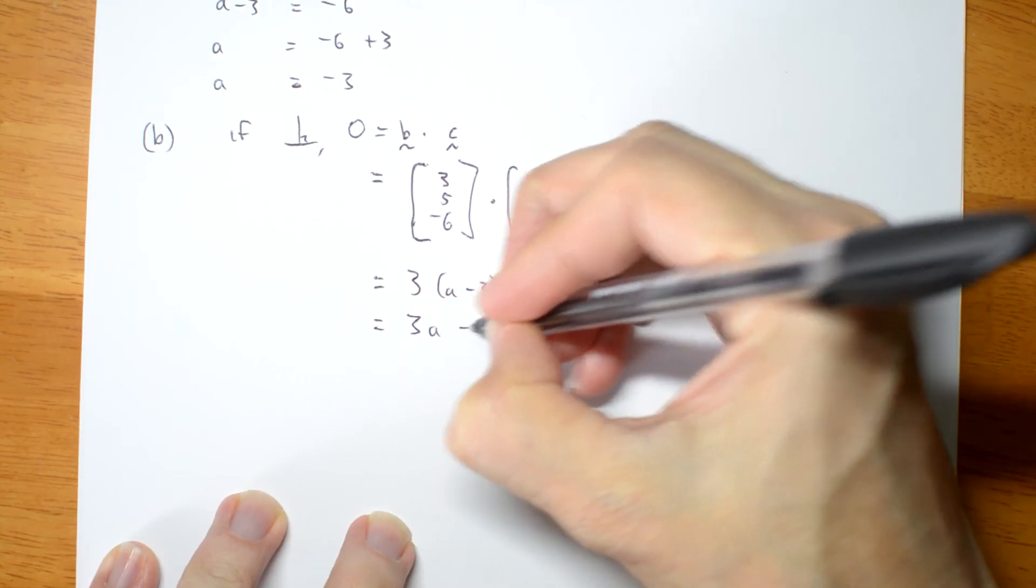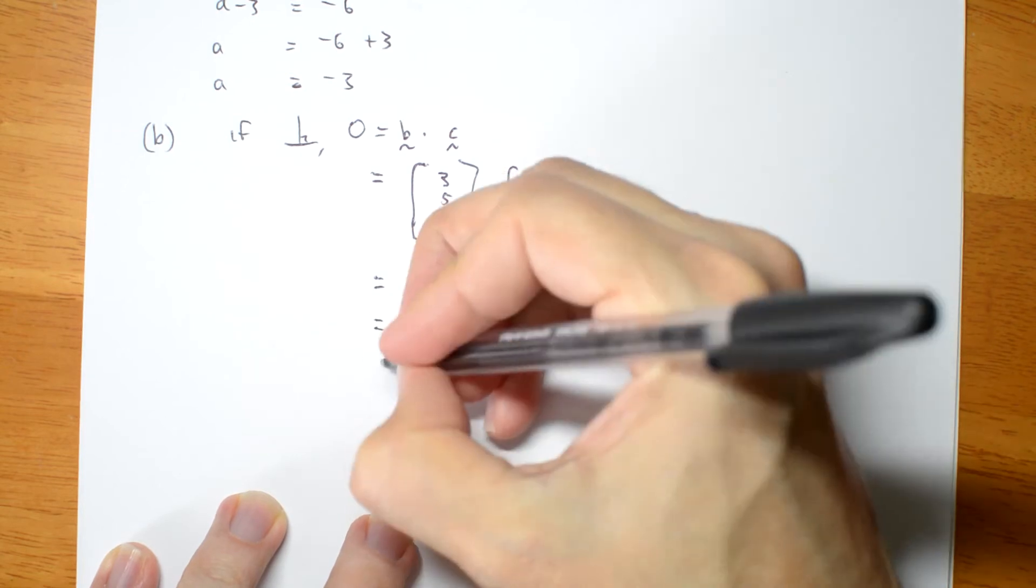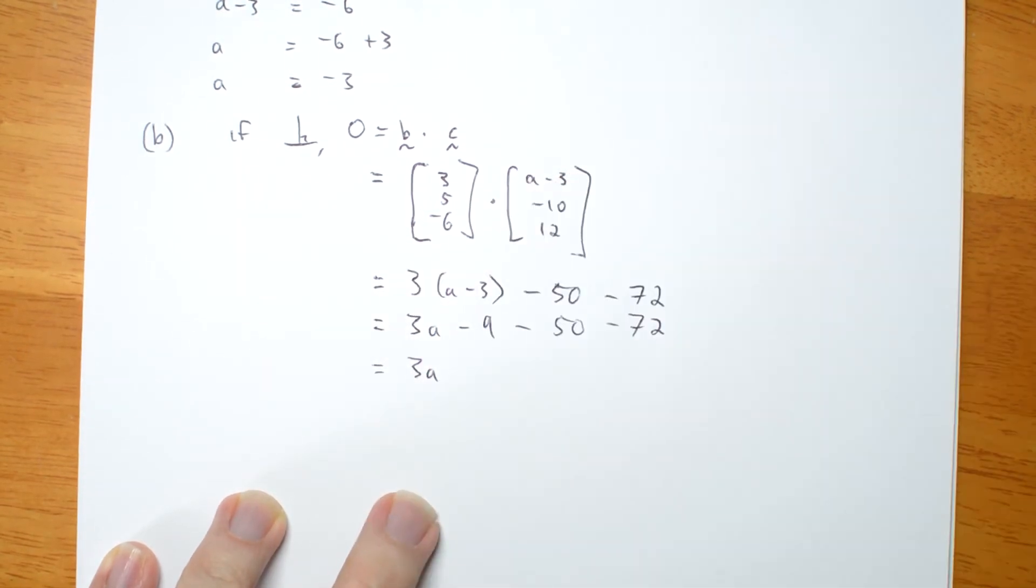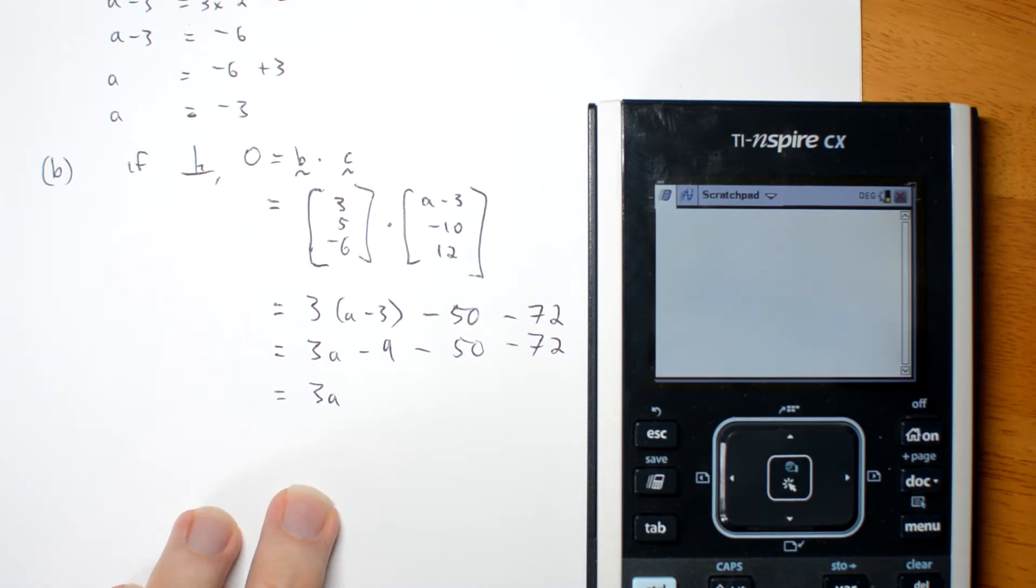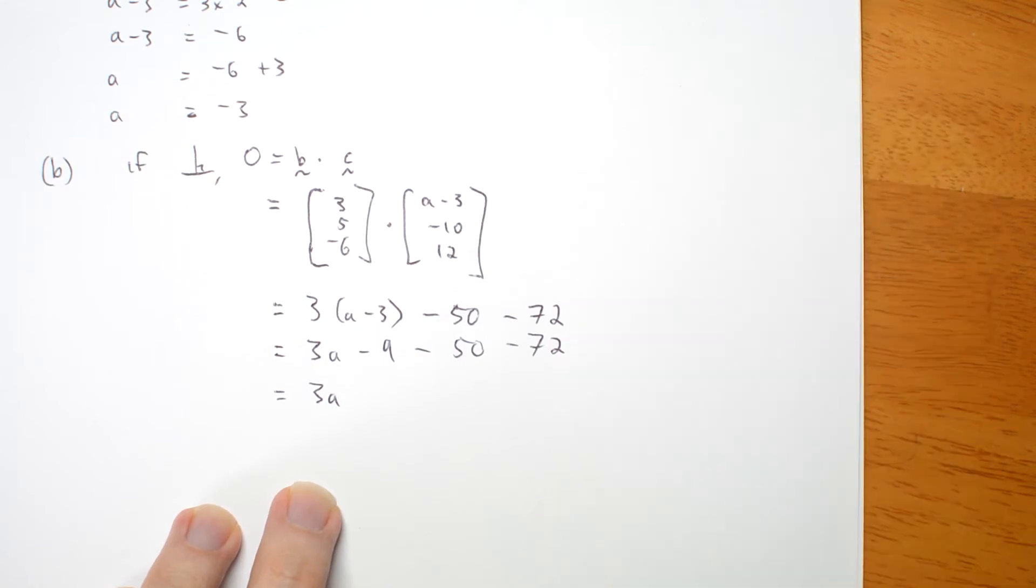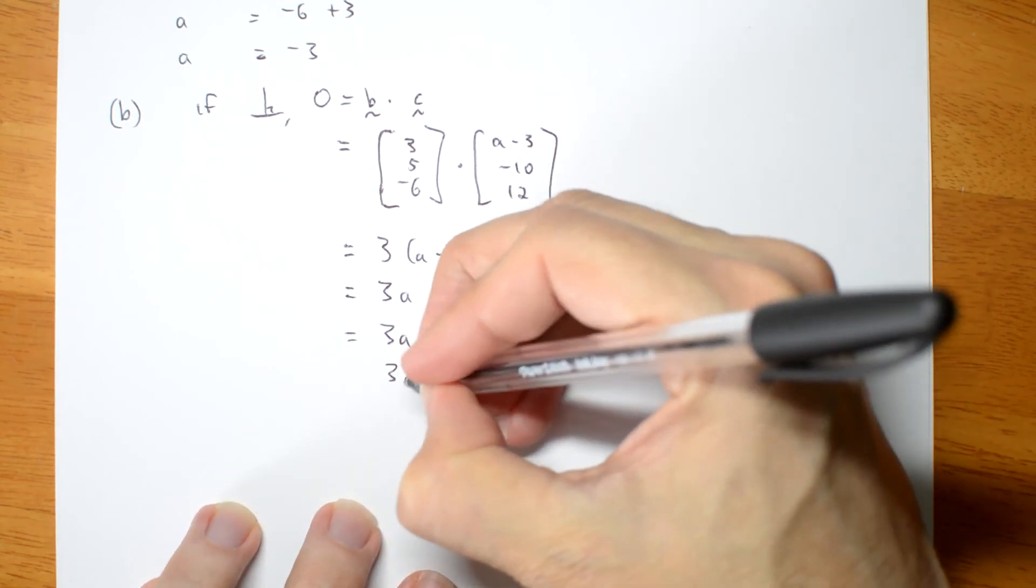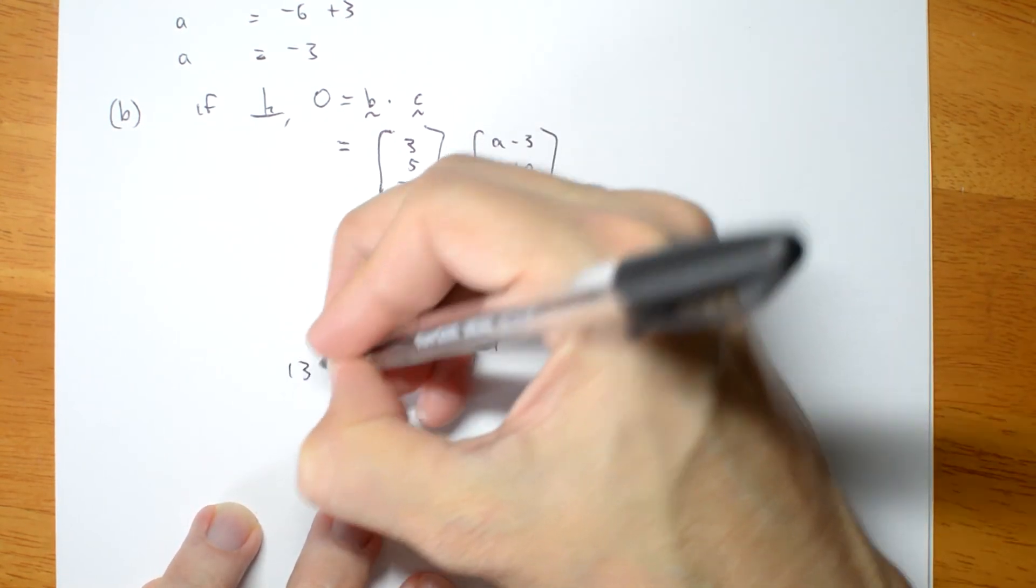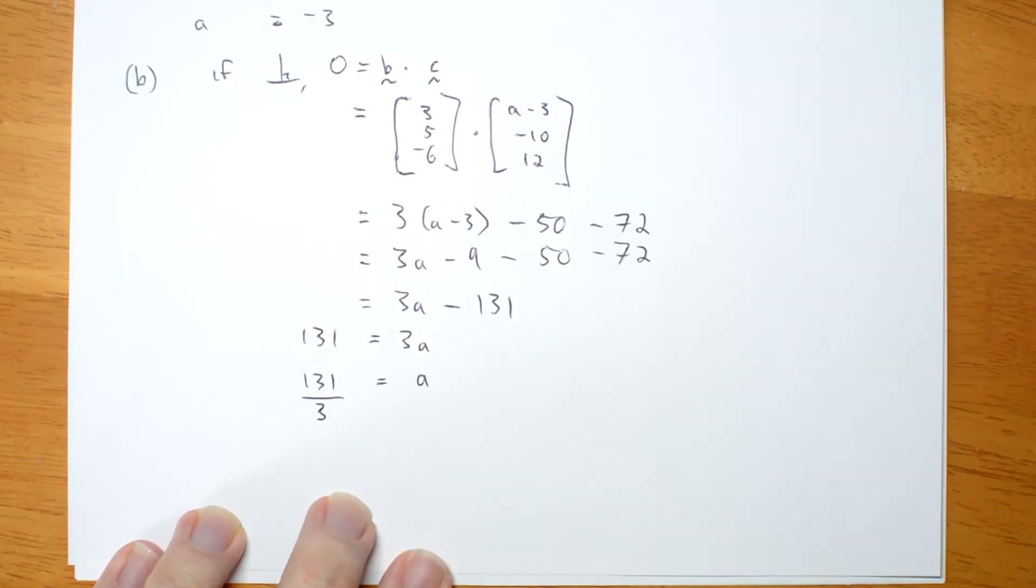Expand the brackets. 3A take 9, take 50, take 72. 3A, let's work this number out. Make sure I don't make any mistakes. 9 plus 50, plus 72. 131 minus 131. So 3A is 131. A must be 131 over 3.